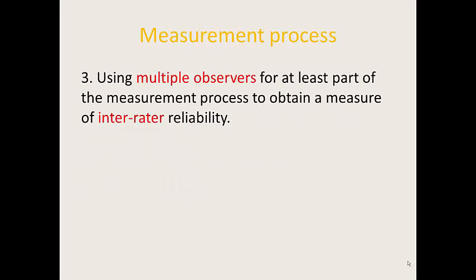The third method for measurement is using multiple observers. That's a good idea for all types of observations because if you have only one observer, it's very likely that you disregard or don't notice some specific behaviors or events. So it's always a good idea to have multiple observers and then check with them for interrater reliability. And of course, if you videotape your students, there is probably no need for multiple observers.